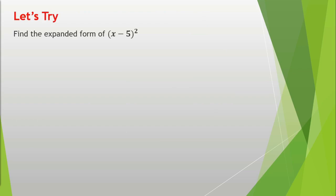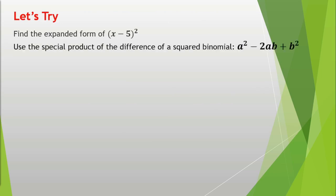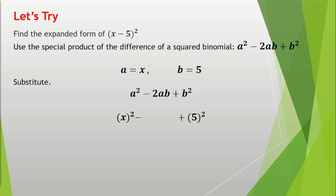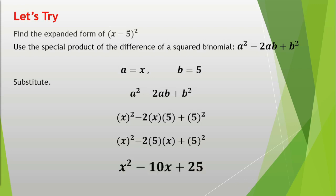Let's try this one. Find the expanded form of the quantity of (x minus 5) raised to the power of 2. Let's use the special product of the difference of a squared binomial, which is a squared minus 2ab plus b squared. Get the values of a and b: a is equal to x and b is equal to 5. Substitute the values into the special product of the difference of a squared binomial. Now we have x squared minus 10x plus 25.